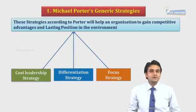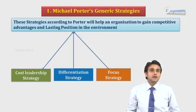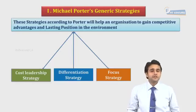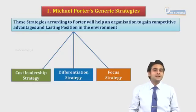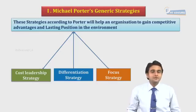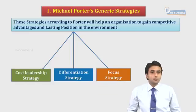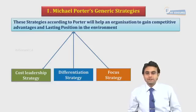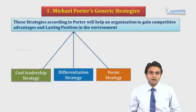Ducati only makes high-end bikes. One of the recent bikes it has made is the Ducati 1200cc Multistrada, which it sells at around 25 lakh rupees. So it goes purely after one small group of consumers, which are its target audience. Bajaj and Honda cover up the majority of the market share.